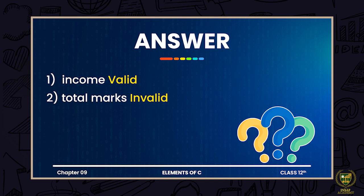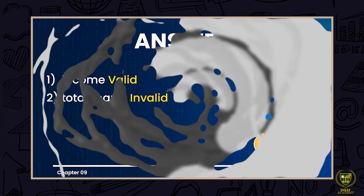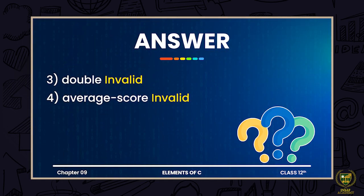The third variable name is 'double'. In the case of 'double', you have to determine whether this is a valid variable name or not. It is not valid because we said that keywords cannot be used as variable names. For example, 'for', 'int' — such words or combinations that already exist as keywords cannot be declared as a variable name. Since 'double' is the name of a data type, we cannot use it as a variable name — it is a reserved word.